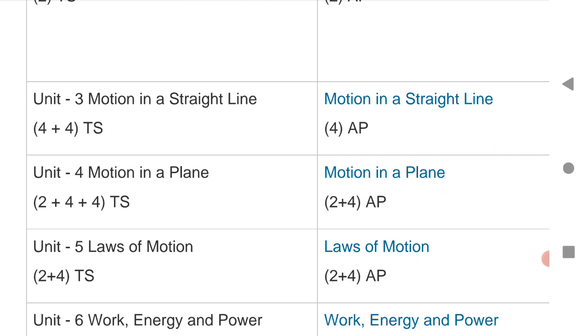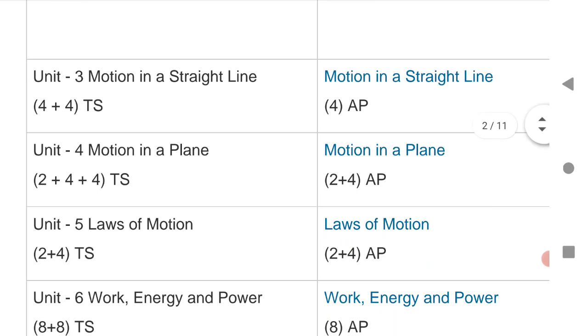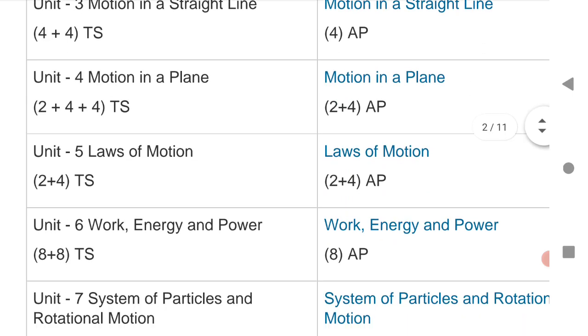Motion in a plane, two plus one VHCQ, two SQ for motion in a plane for Telangana. For motion in a plane in AP, one VHCQ, one SQ.